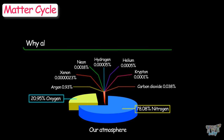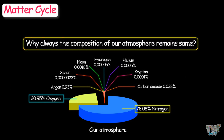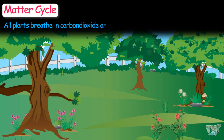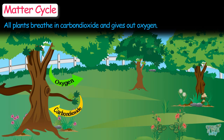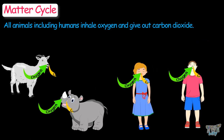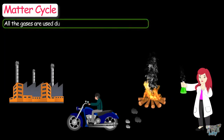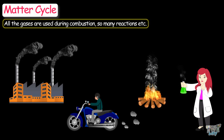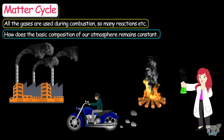Why does the composition of our atmosphere always remain the same? Why is it always 78.08% nitrogen? How is it always 20.95% oxygen? We all use these gases on a daily basis. All plants breathe in carbon dioxide and give out oxygen. All animals, including humans, inhale oxygen and give out carbon dioxide. All the gases are used during combustion, and so many other reactions occur. So how does the basic composition of the atmosphere remain constant?